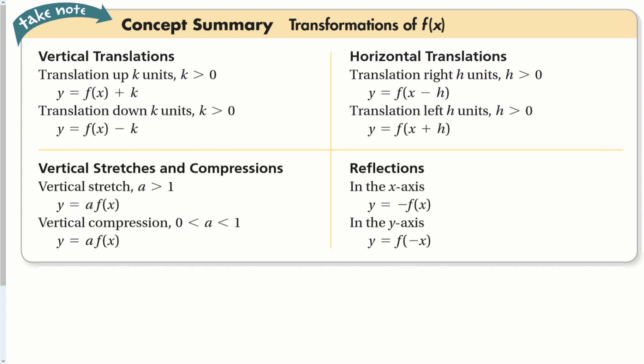Here is a recap of all the different transformations we can put on a function. If on the outside of the function we add k, that shifts the function up; subtract k shifts it down. Most of the functions in this chapter are going to be cubes or x to the 4th, so there will be some exponent. You can tell whether it's up/down or left/right because you'll have parentheses and an exponent.